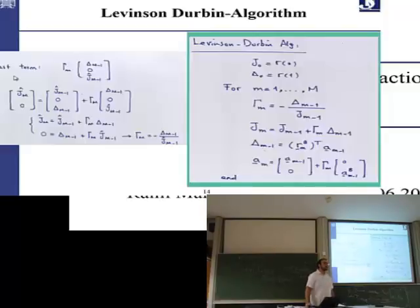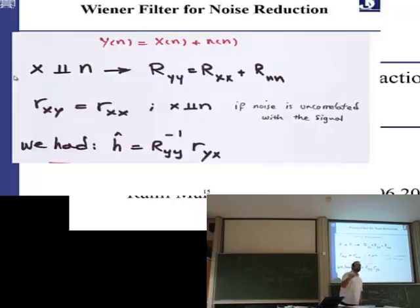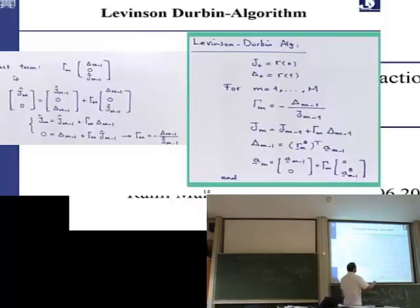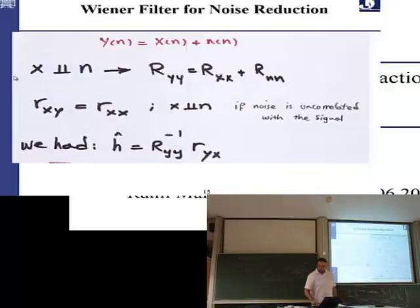The Levinson-Durbin algorithm is already available in MATLAB — you can look up the command and get all the delta values, J_n values, errors, and the filter taps directly. You don't need to implement it from scratch; it's just useful to understand how it works.